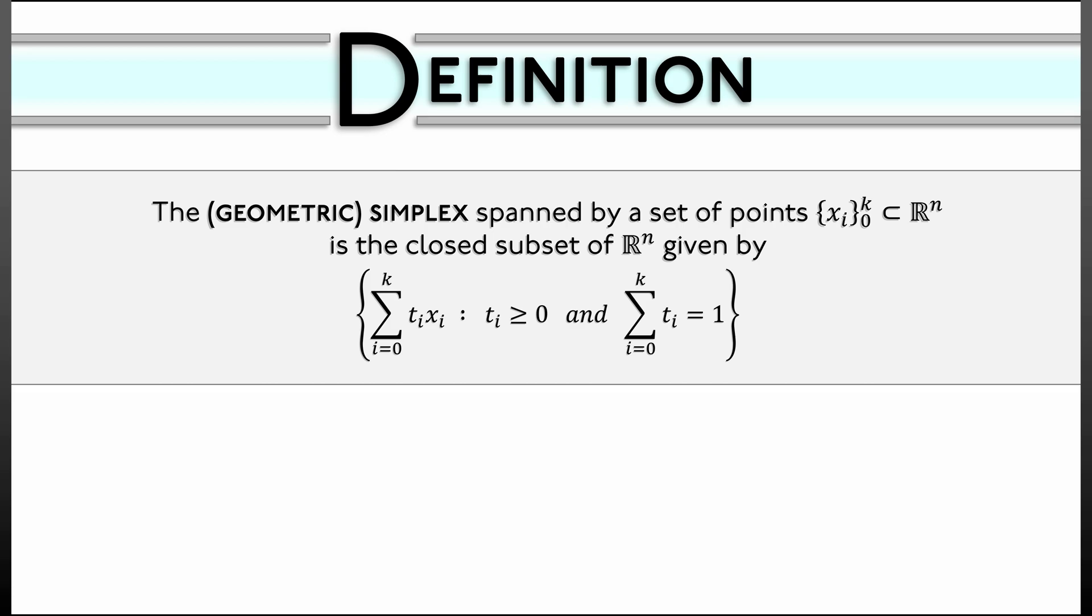So we're just taking a linear combination of all the possible points, but doing so with non-negative coefficients adding up to one. Notice that these points can be any points inside of Rⁿ. There's no notion of independence or what the shape looks like.